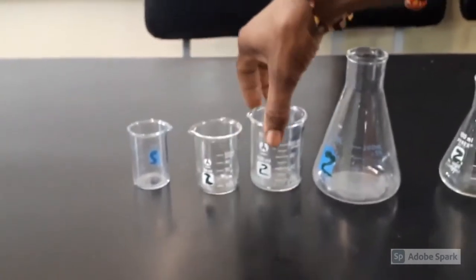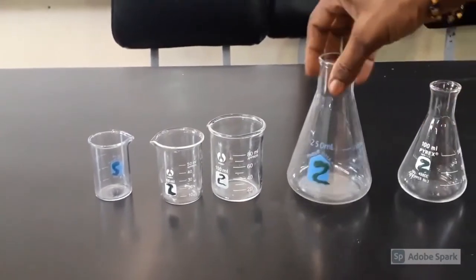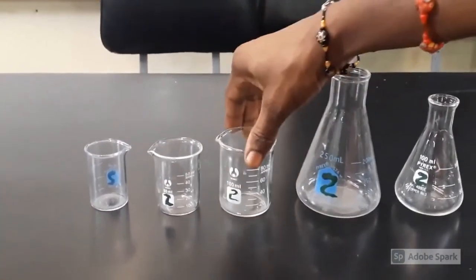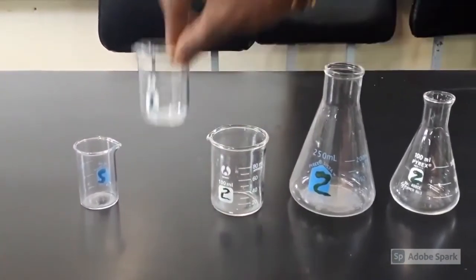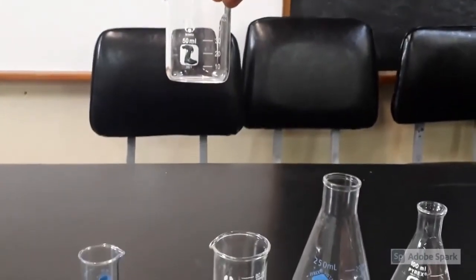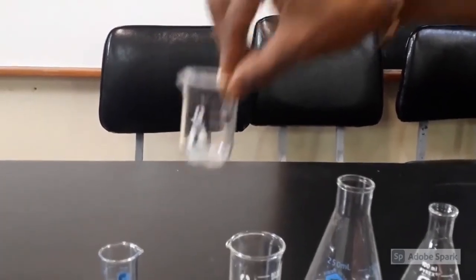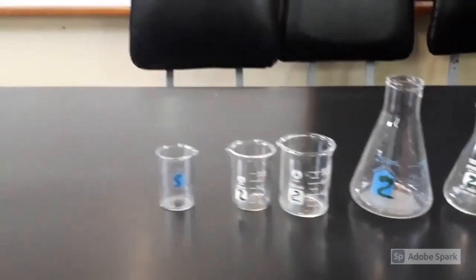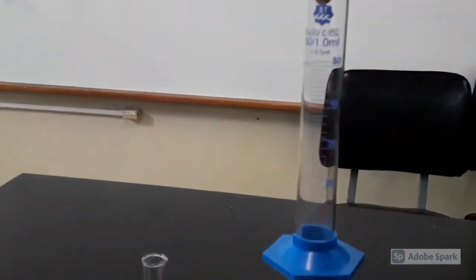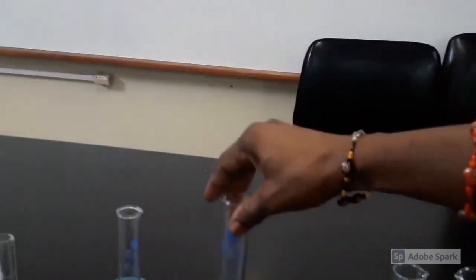Beakers and Erlenmeyer flask, they are non-volumetric. Even though there's calibration on them, they are just used for holding the liquid, so we are not using them for measuring. That is why we classify them as non-volumetric. So this is just 50 mil, it says it can hold approximately 50 mil, but it's not meant for measuring 50 mil. If we have to measure a 50 mil liquid, we use a measuring cylinder. This is a 50 mil measuring cylinder.